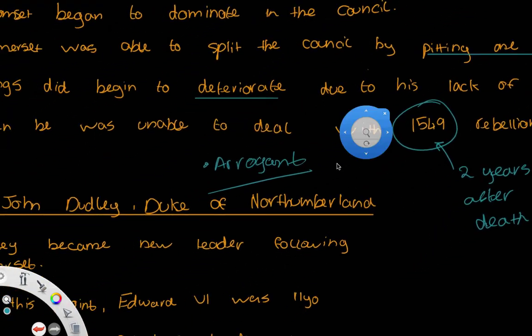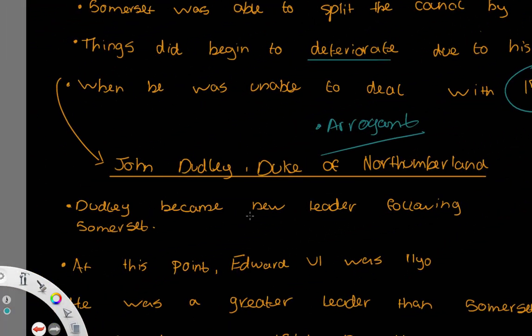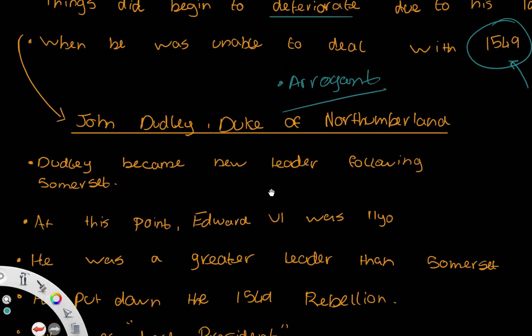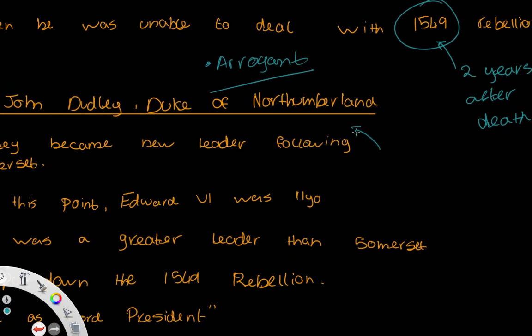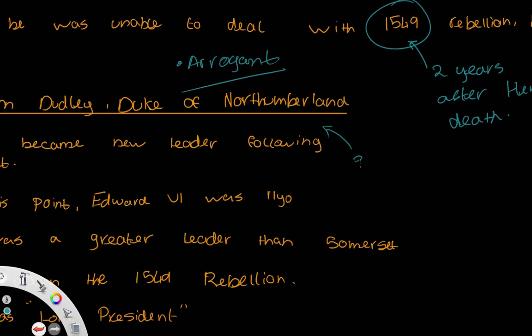Edward Seymour was then replaced by John Dudley, the Duke of Northumberland. Dudley was a lot more charismatic, a lot more well off, and a lot more politically talented. He began as the Earl of Warwick — he wasn't even the Duke of Northumberland at first, he started off as the Earl of Warwick — but was then promoted by Edward.